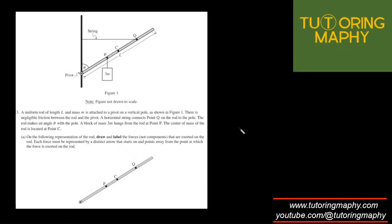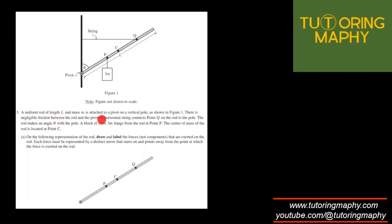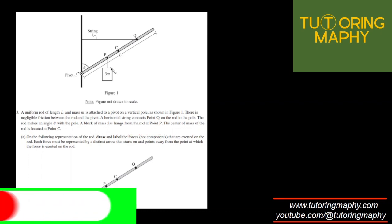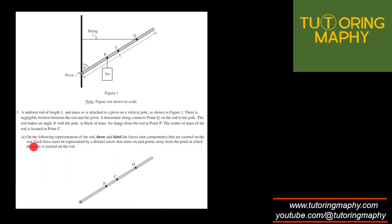This video covers AP Physics C Mechanics 2024 FRQ 3 solution. A uniform rod of length L and mass m is attached to a pivot on a vertical pole. There is negligible friction between the rod and the pivot. A horizontal string connects point Q on the rod to the pole so that the rod makes an angle theta with the pole. A block of mass 3m hangs from the rod at point P, and the center of mass of the rod is at C. The question asks us to draw and label all forces on the rod, each represented by a distinct arrow starting from the point of application.